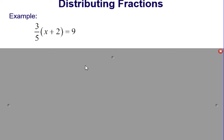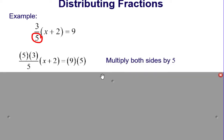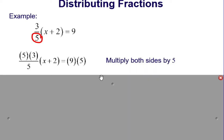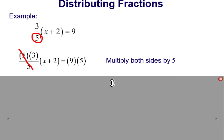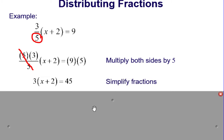Here's another example of an equation with a fraction: 3 fifths times the quantity x plus 2 equals 9. Instead of distributing the 3 fifths, we can multiply both sides by the least common denominator, which in this case is going to be 5. That cancels out the denominator of 5 and leaves us with 3 times the quantity x plus 2 equals 45.